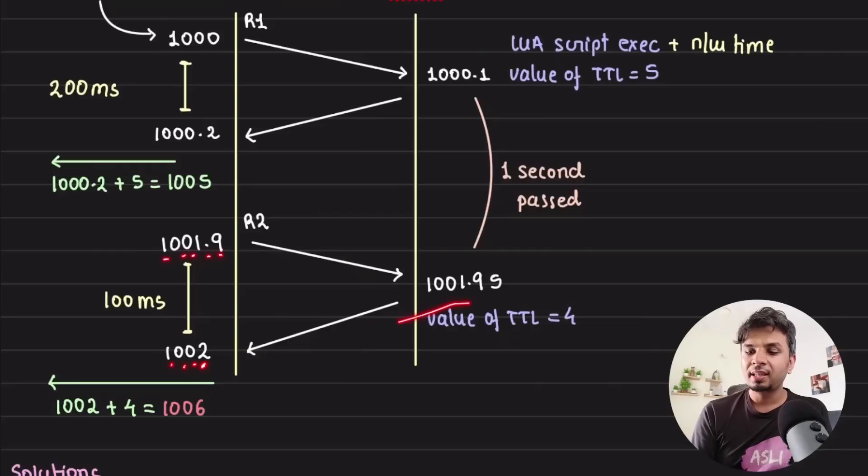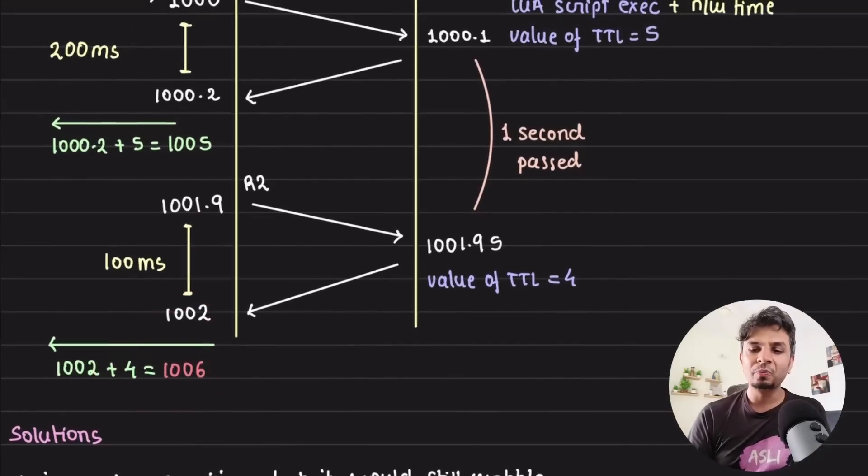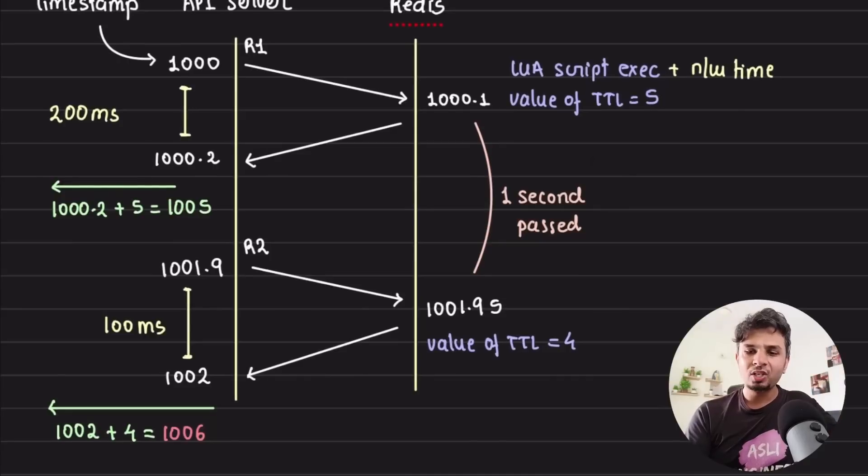1002—the value it received is 4 TTL. 1002 plus 4 equals 1006. So at one point, your x-rate-limit-reset header got value 1005. In the next instant, it got 1006.